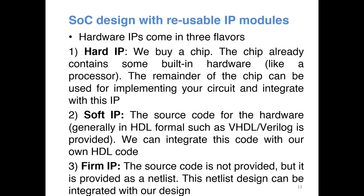IPs usually come in three flavors. The first is called hard IPs, which are built into the chip — you can use that hardware block but you cannot change it. A good example is the processor core inside an SOC, which comes as a hard IP. The second is called soft IP, where the IP developer gives you the source code in VHDL or another hardware description language. You can use that code directly in your system development, integrating it with your custom code to build your system.